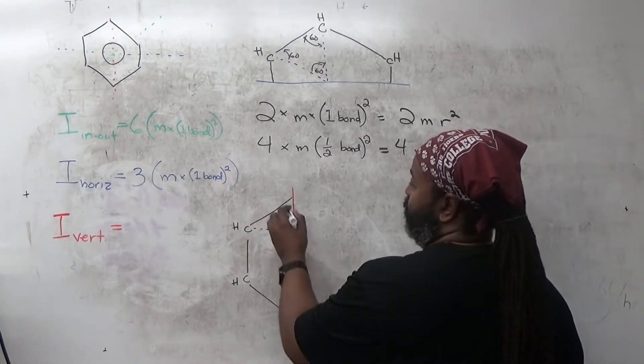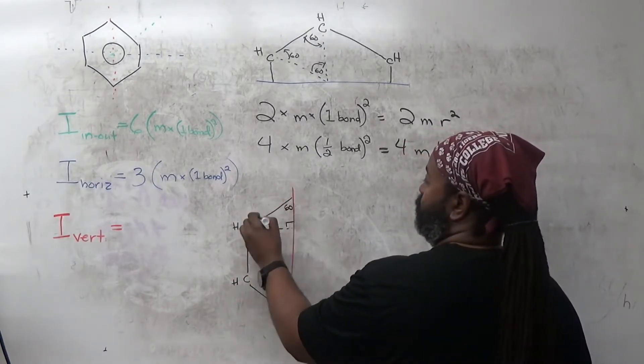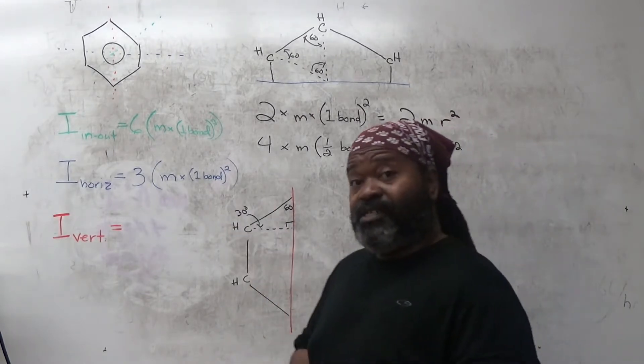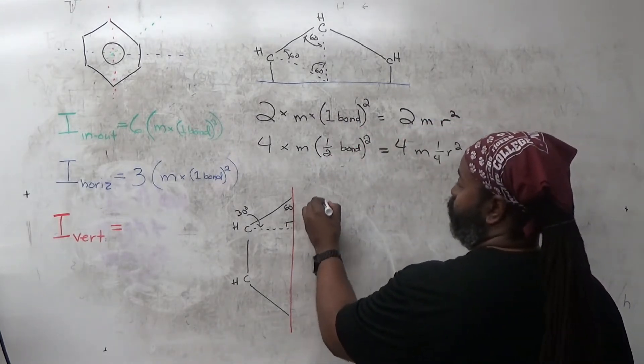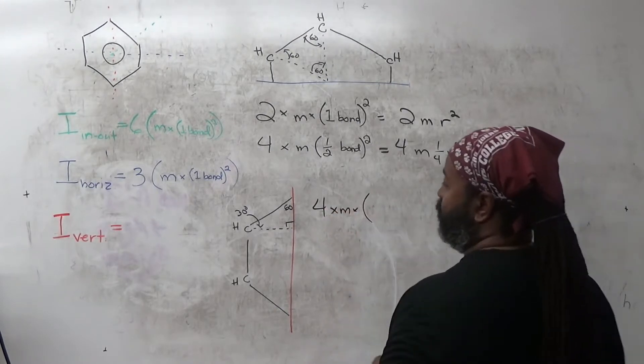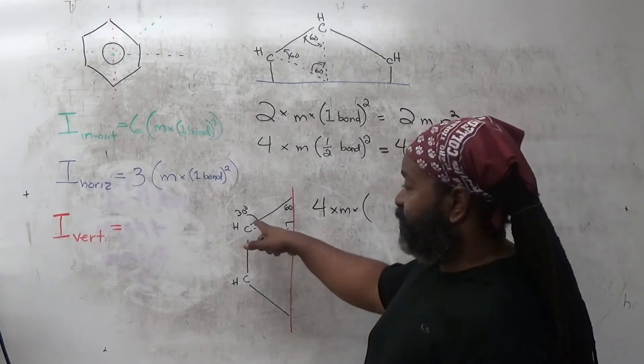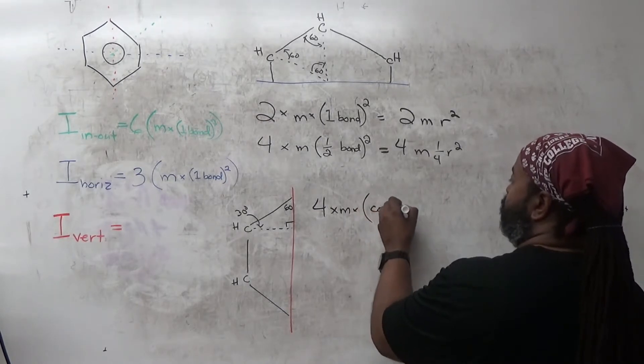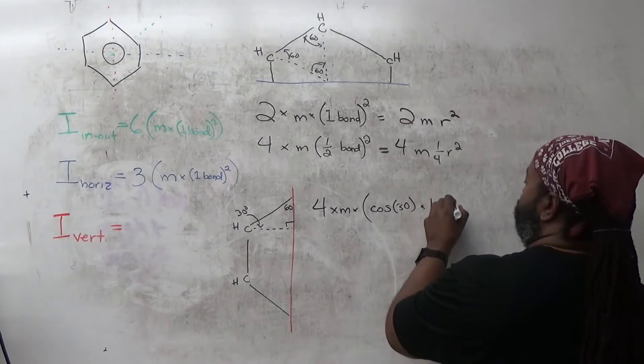So if that's the right angle, because this cut in half, this has to be a 60, which means that this one in here is a 30 degree angle. And now we can use some trigonometry to figure all of that out. So I'm going to have 4 of these, mass, and I'm going to have the bond length. But what I'm multiplying by is the cosine of 30. So that's cosine of 30 times the bond length.